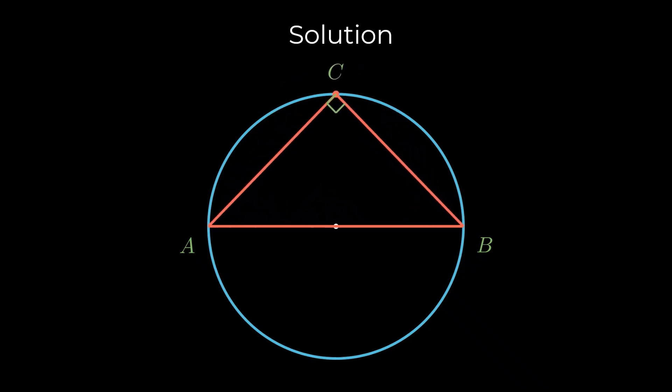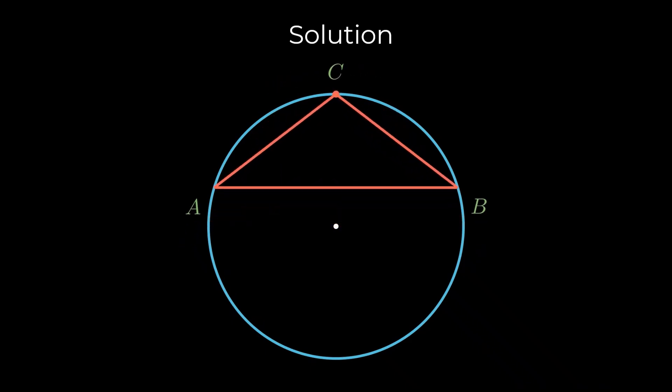If we now move the diameter AB upward toward C, the angle ACB becomes obtuse and the triangle becomes obtuse-angled. Note that an obtuse angle can occur only when there exists a side of the triangle such that the center of the circle and the vertex opposite that side lie on opposite sides of it.